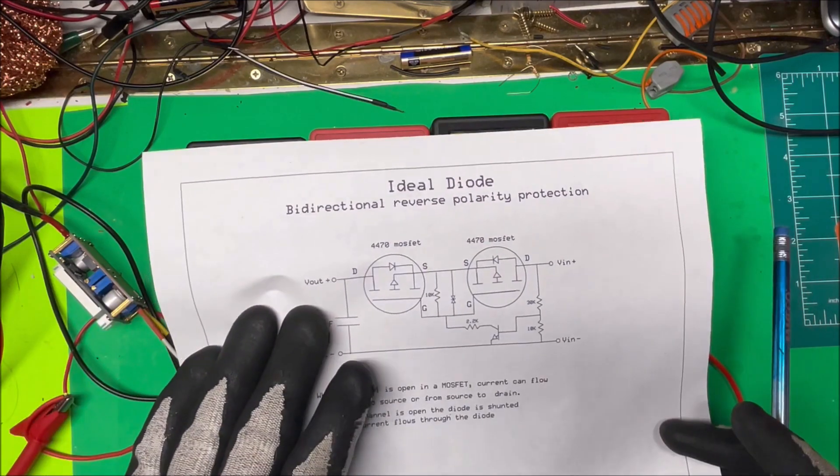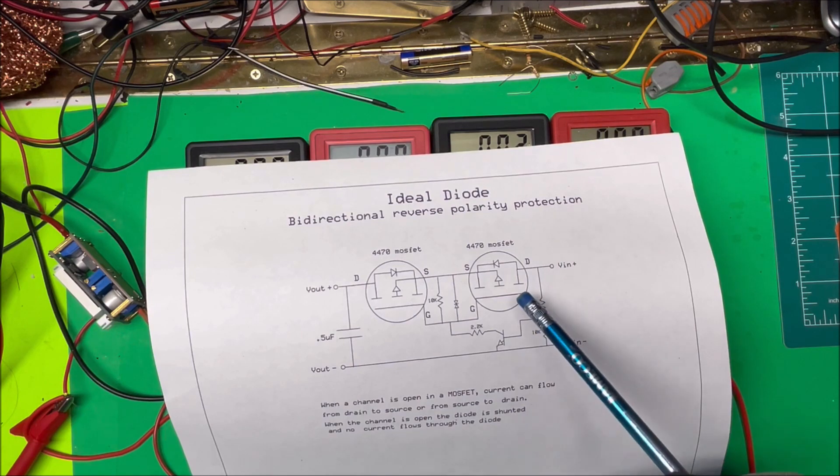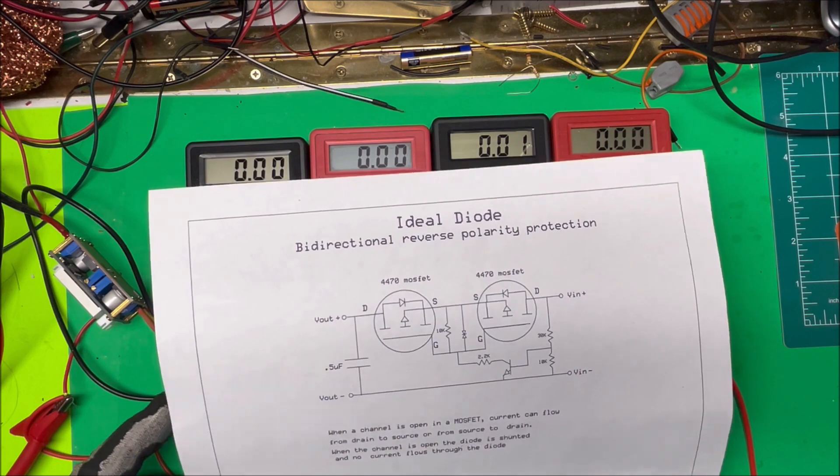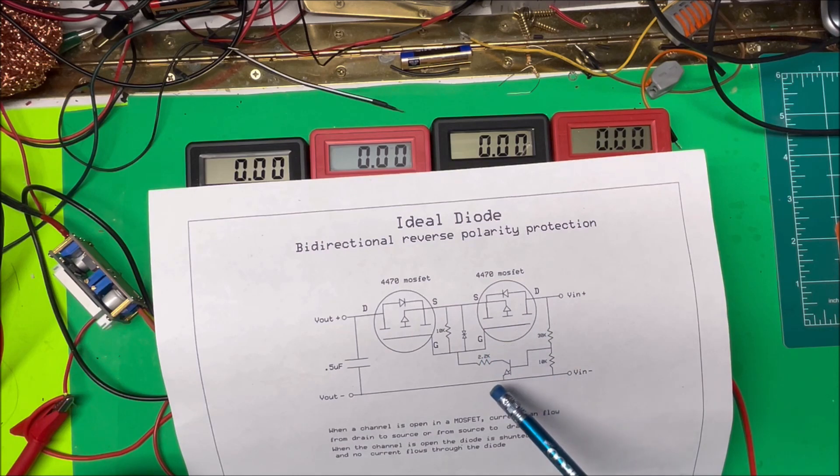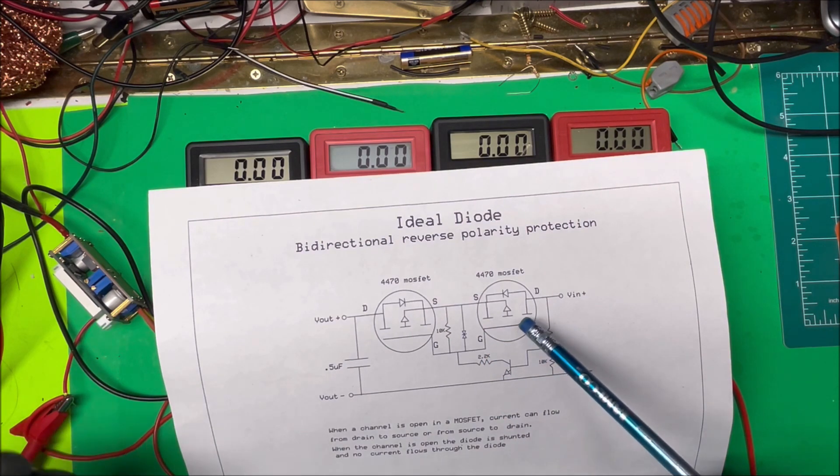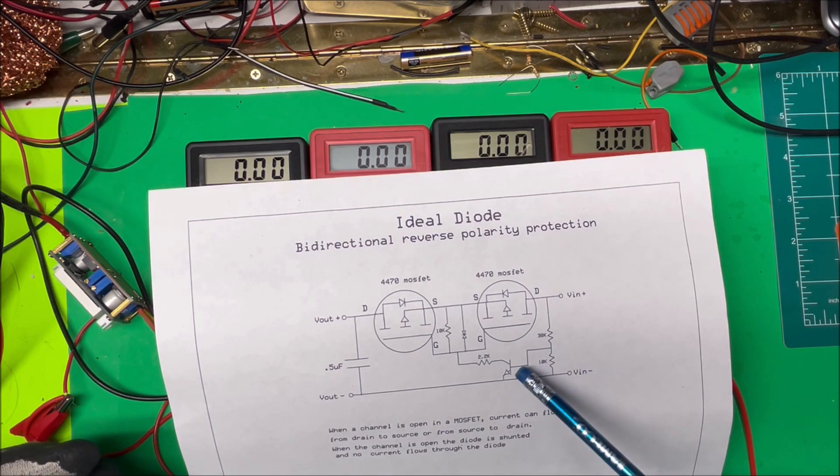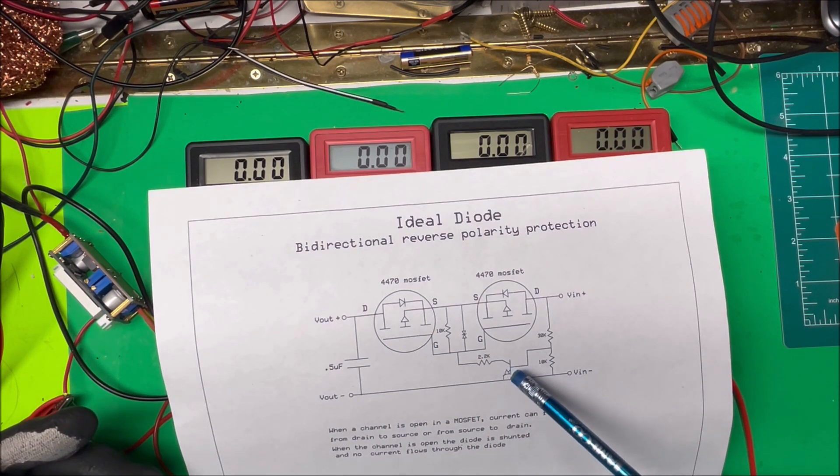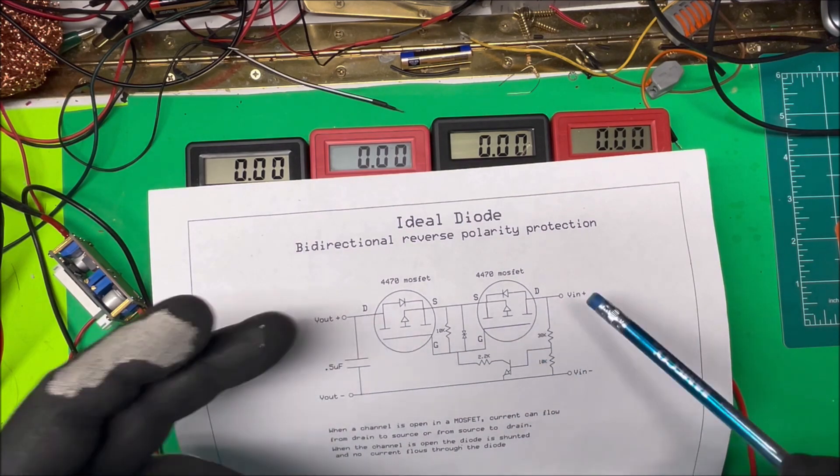So here we are, here I drew up a schematic of this little module here. We've got two P-channel MOSFETs. In order to control the P-channel MOSFET you take the gate to becomes negative and then the channel will turn on. So to do that they just have a voltage divider here going into a transistor. When you put power over here on this side here it just turns the transistor on, brings the gate to negative and turns the two MOSFETs on.